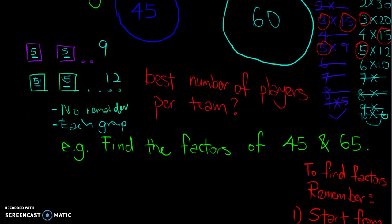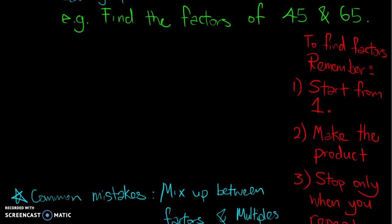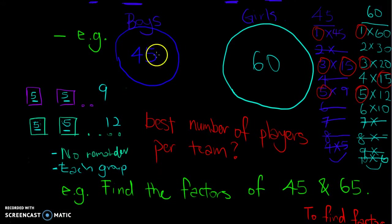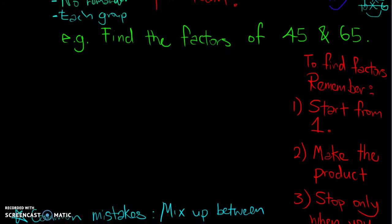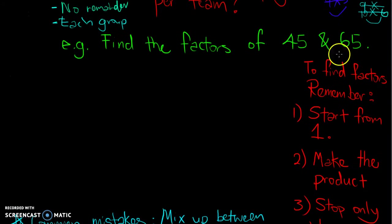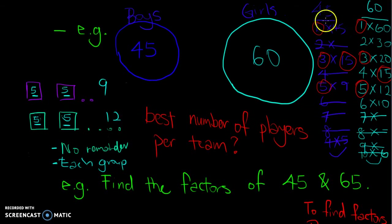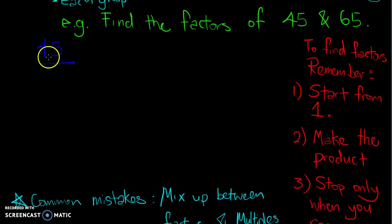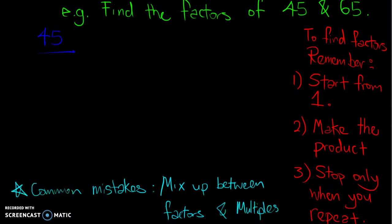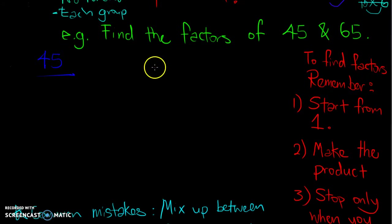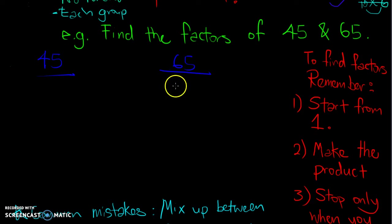In the exam, they are likely going to ask you to find the factors of 45 and 65. So here's an example: find the factors of 45 and 65. First, make sure you have enough space on paper — it can be quite long. Start at the top and work down, leaving space for the factors of each number.